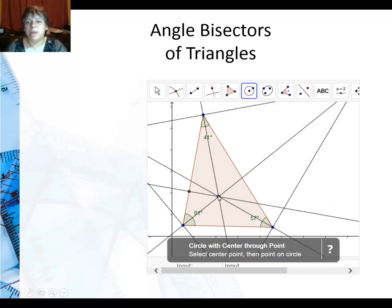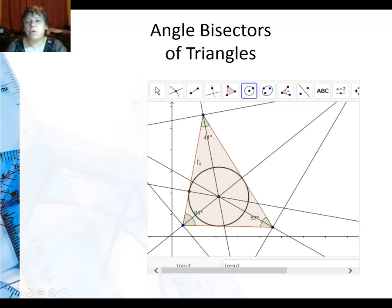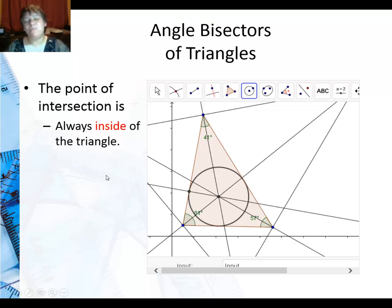Circle with center through a point. So I can actually show that you can make a circle that perfectly fits inside with the center where the angle bisectors intersect. So the main thing is that the point of intersection is always going to be inside of the triangle.